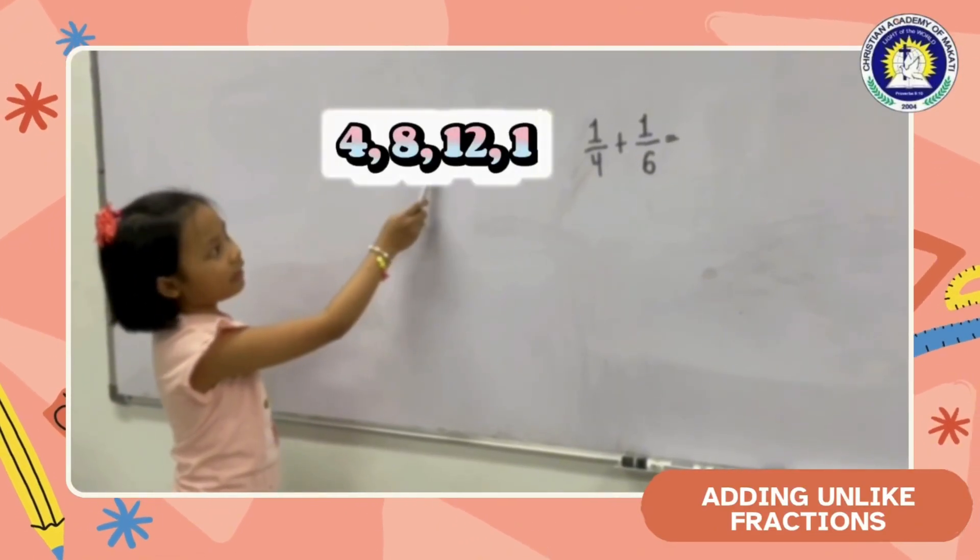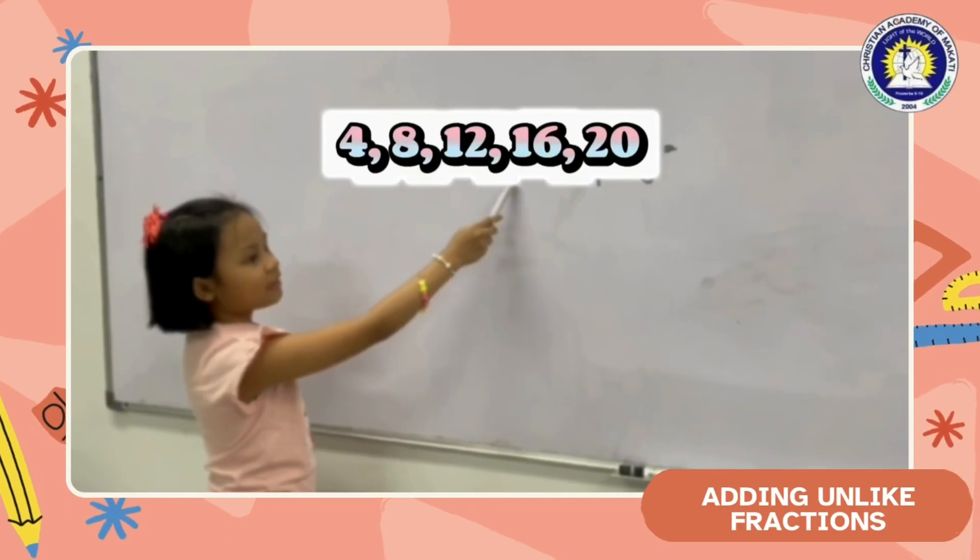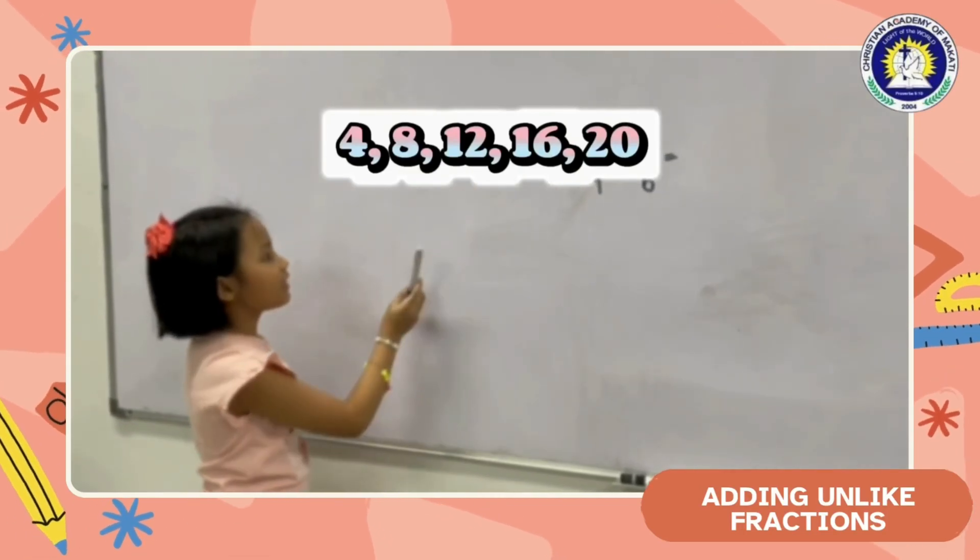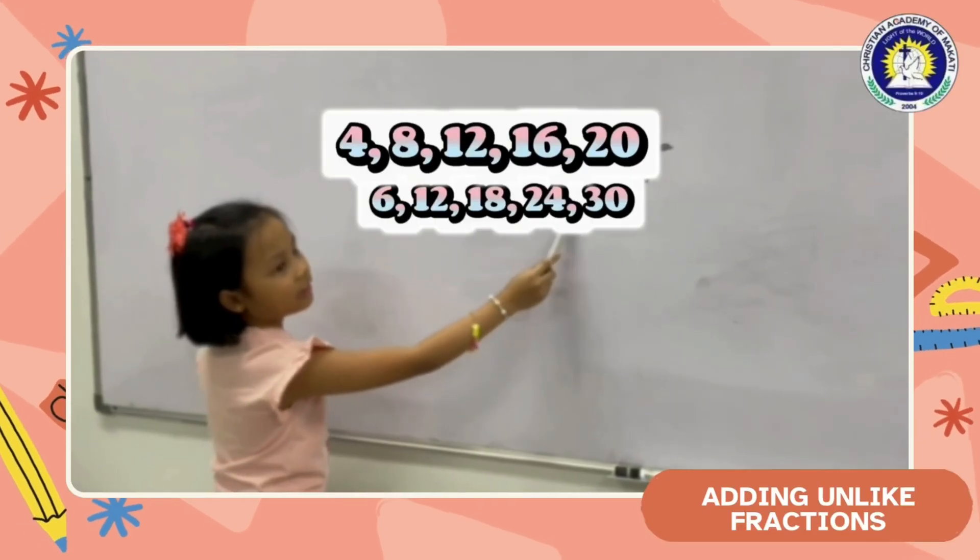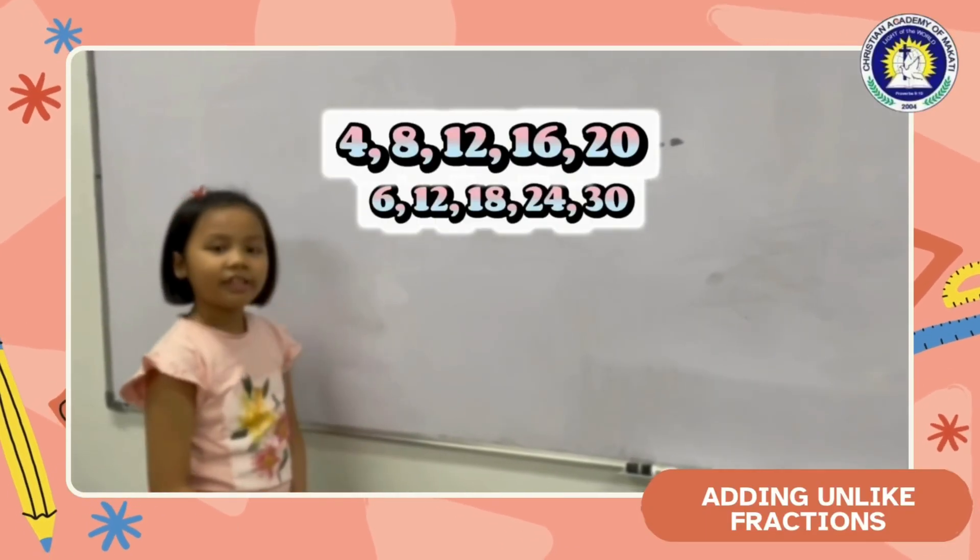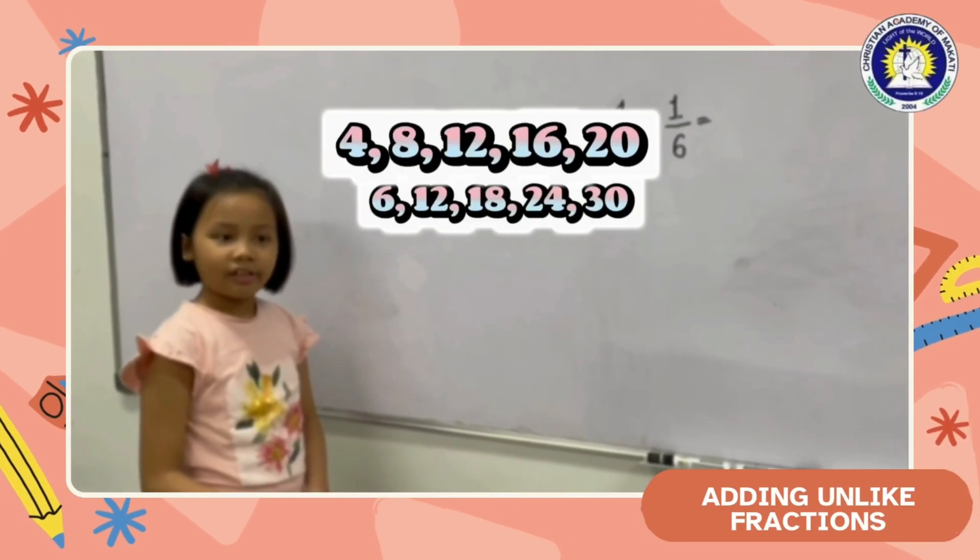So 4, 8, 12, 16, 20. And for 6: 6, 12, 18, 24, 30. So the LCM in there is 12.